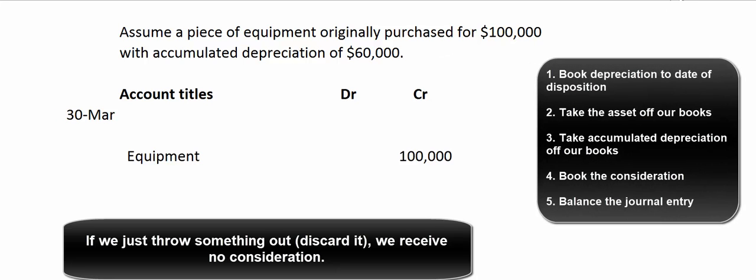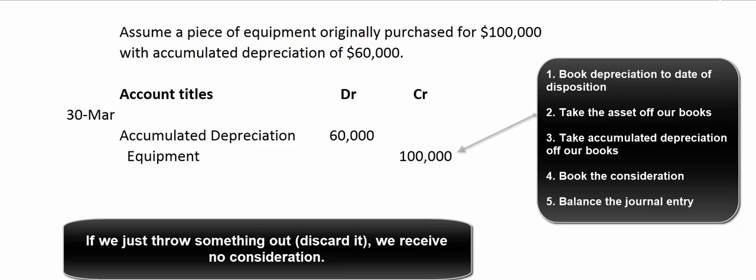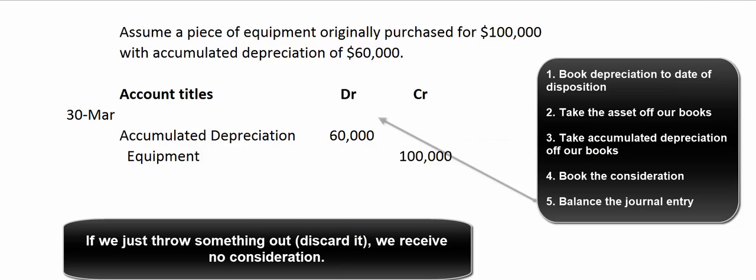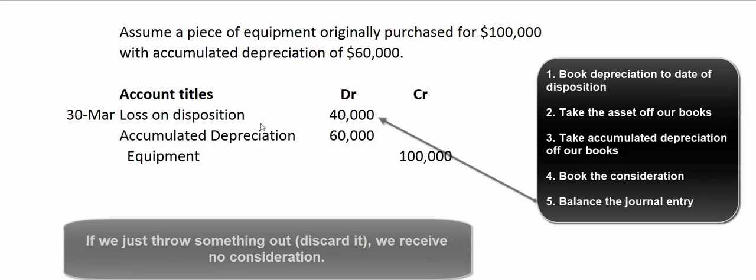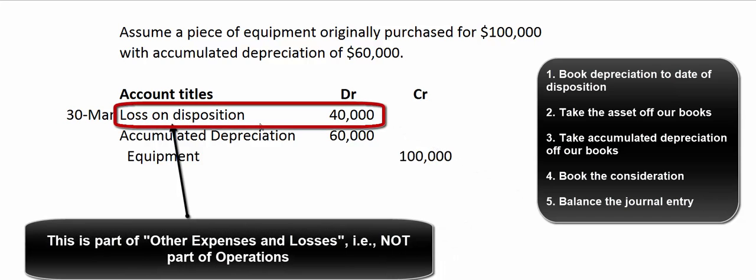Let's assume that we've already booked the depreciation to the date of sale. We take the equipment off our books with a credit. We take the accumulated depreciation off our books with a debit of $60,000. And to make that journal entry balance, we need another $40,000 worth of debits — that's called loss on disposition. On our income statement, that's going to show up in other losses or expenses. It's not part of our operating income, because we're not in the business of selling used equipment.